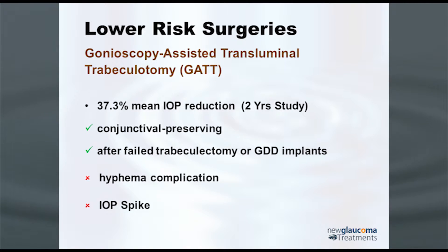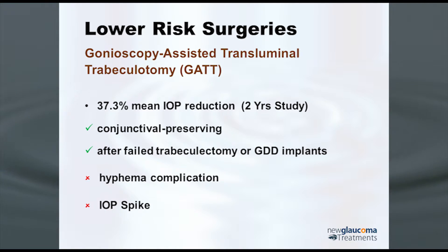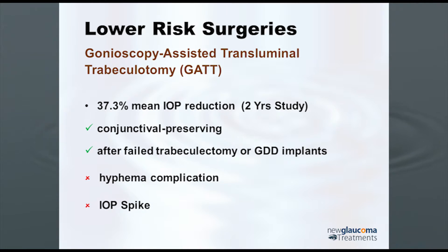If you've got somebody who has not had canaloplasty, you can perform what's called gonioscopy-assisted transluminal trabeculotomy. That's essentially taking that catheter we saw before, but instead of just dilating the canal, you move the catheter — or some people will use a suture if they want a cheaper option. You move the suture around the canal, take the two ends, pull through, and rip through the trabecular meshwork. It also shows a pressure reduction around 40% at two years.